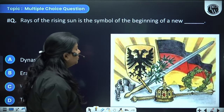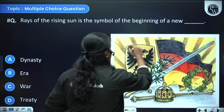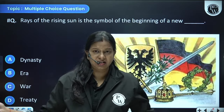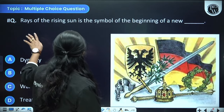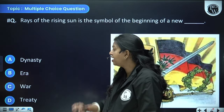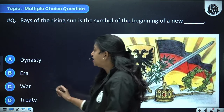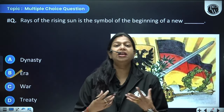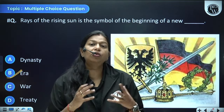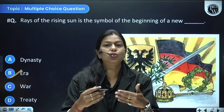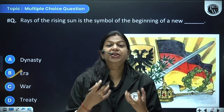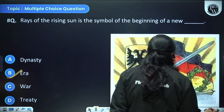Another picture from Nationalism in Europe shows rays of the rising sun behind the Germania allegory. Rays of the rising sun are a symbol of the beginning of a new era — we are breaking away from the old form of rule and moving into a new time where we will have more freedom and liberty. So option B, beginning of a new era, is our answer.